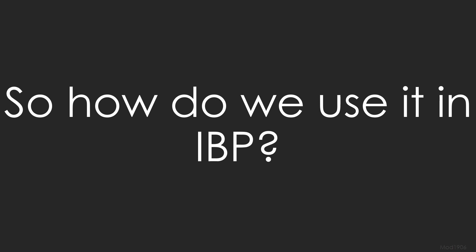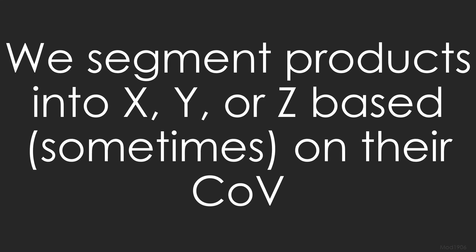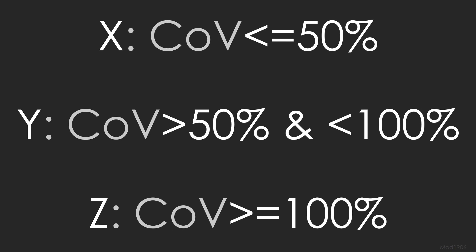So how do we use this COV in IBP? We segment products into X, Y, or Z based on their coefficient of variance. In our example, if the coefficient of variance is less than 50%, it's an X item. If it's between 50 and 100%, it's a Y item. And if it's over 100% COV, then it's a Z item.